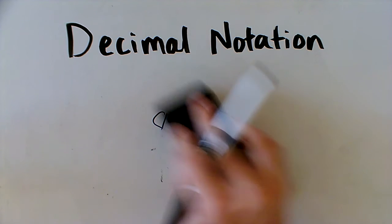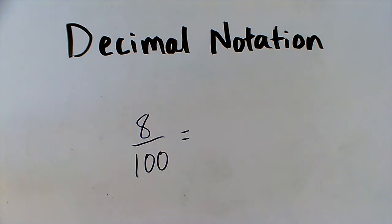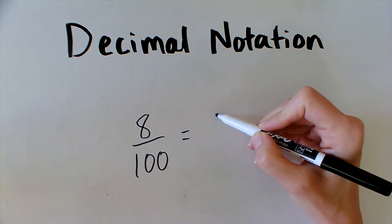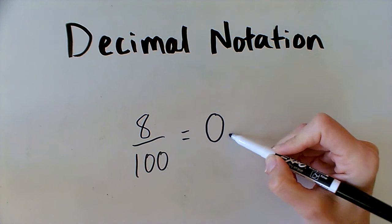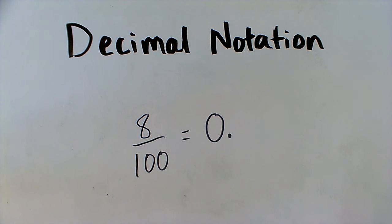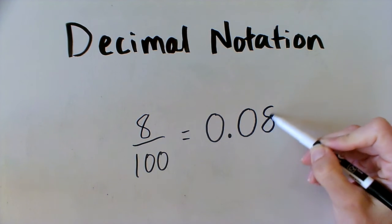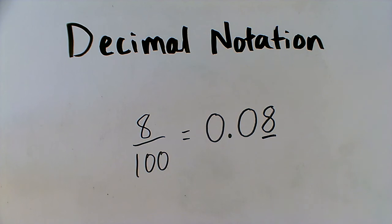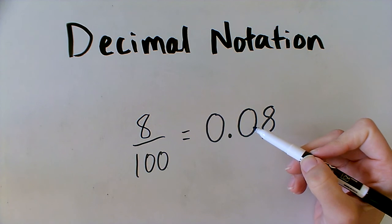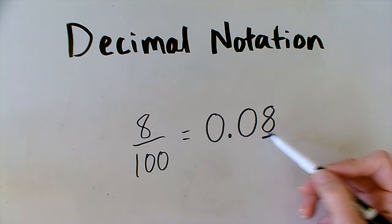This time I want to write eight hundredths as a decimal. I don't have eight tenths — I have eight hundredths — so I have to make sure that the eight goes in the hundredths place. Once again, I don't have any whole numbers, so I have zero. And I don't have any tenths either — remember that ten hundredths would be equal to one tenth, and I don't have that many hundredths. So I have zero tenths, but I do have eight hundredths. Notice how the eight ended up in the hundredths place. I needed a zero in the tenths place as a placeholder so that the eight would be in the hundredths place. So this decimal says eight hundredths, or zero and eight hundredths.